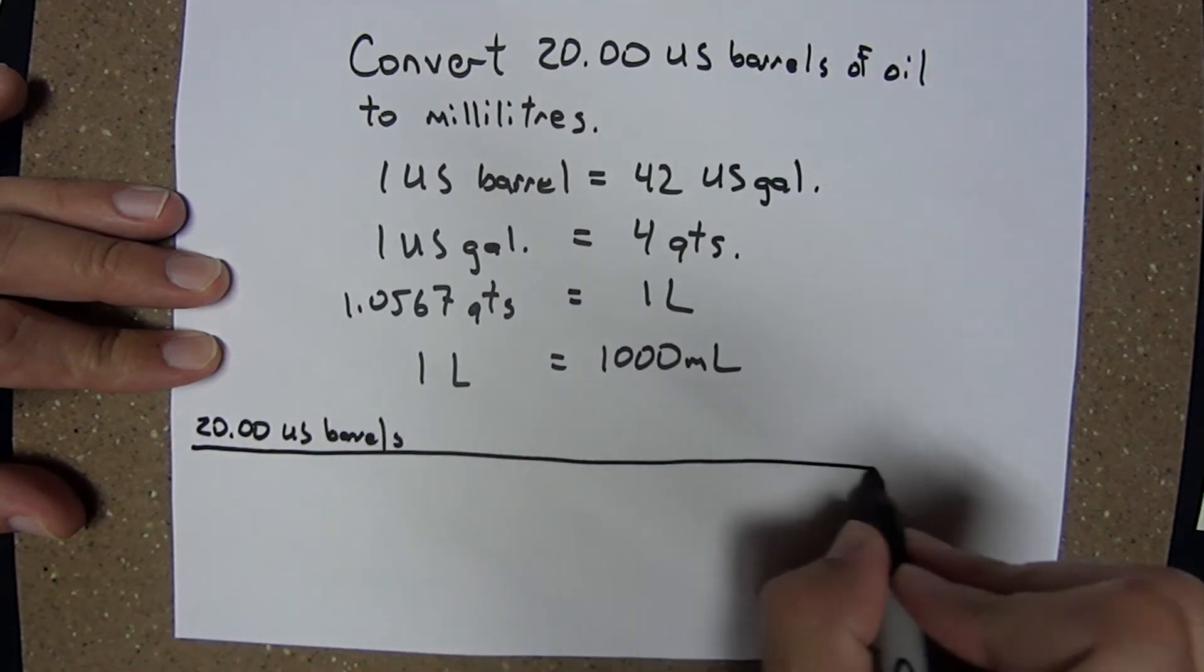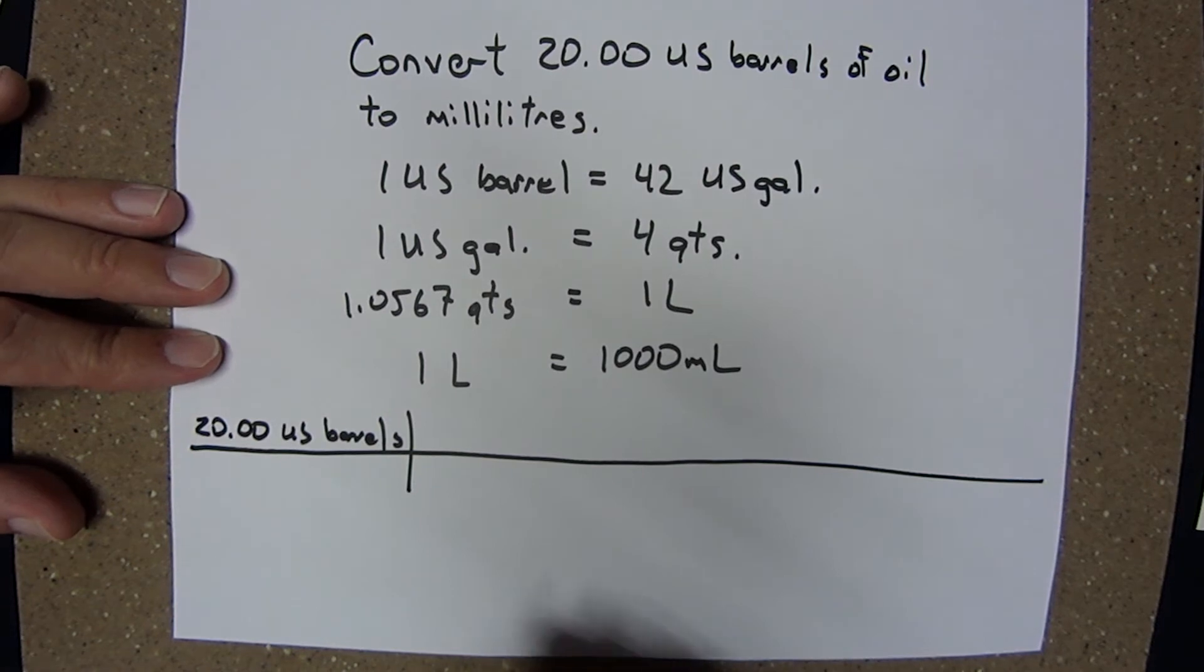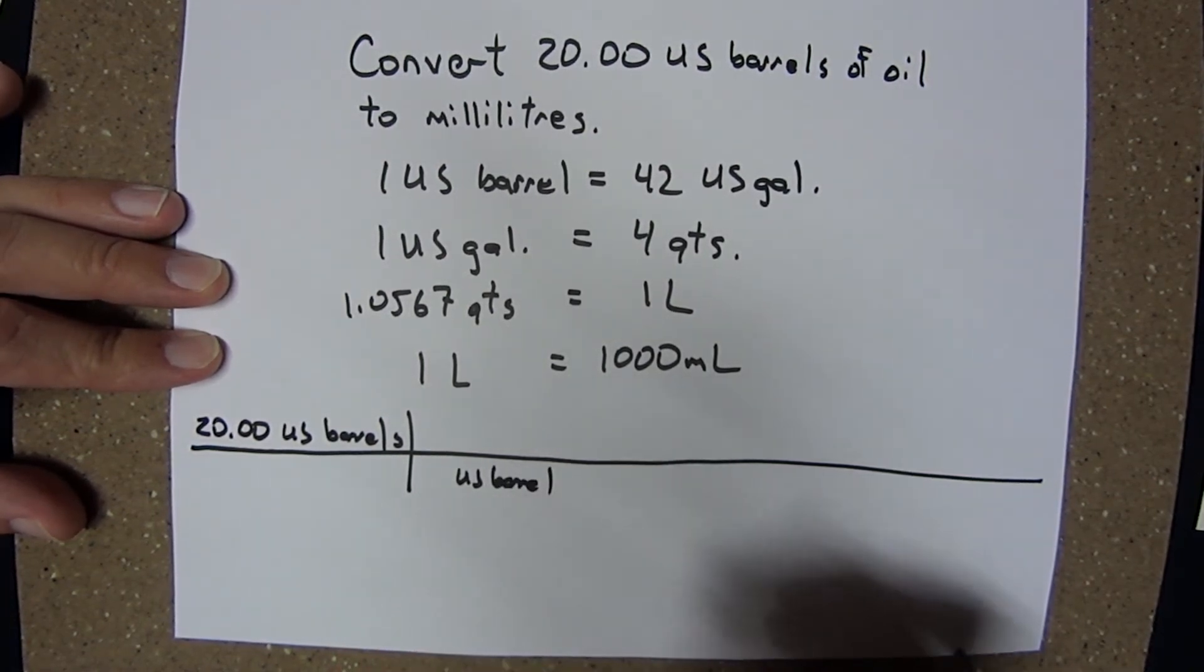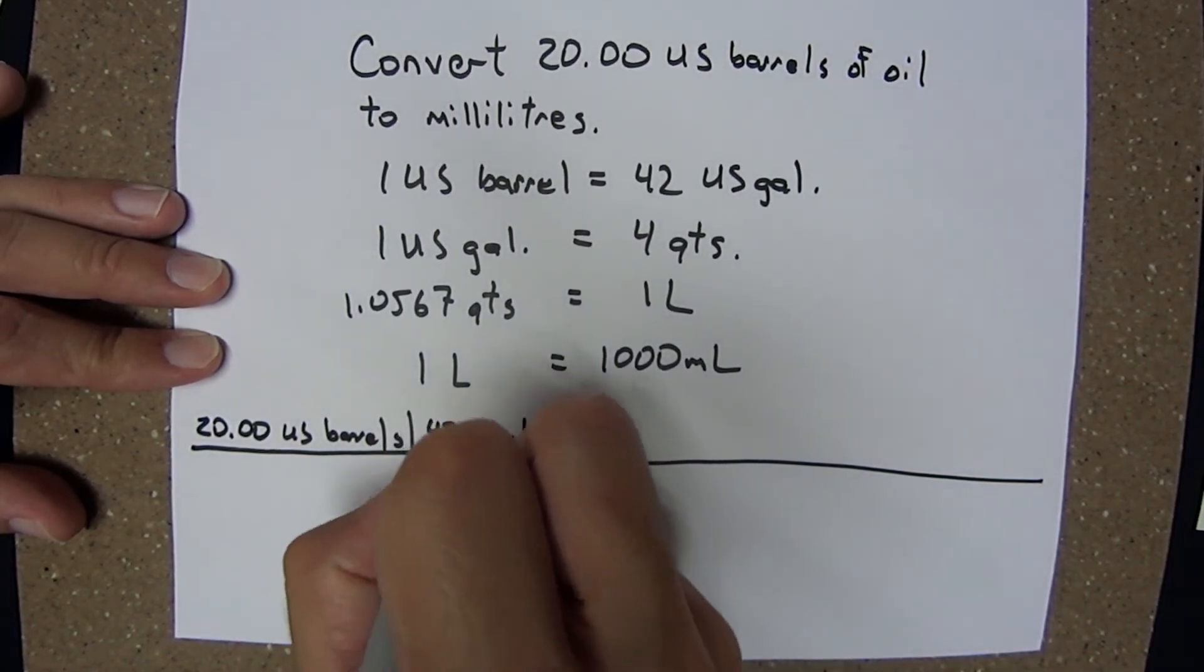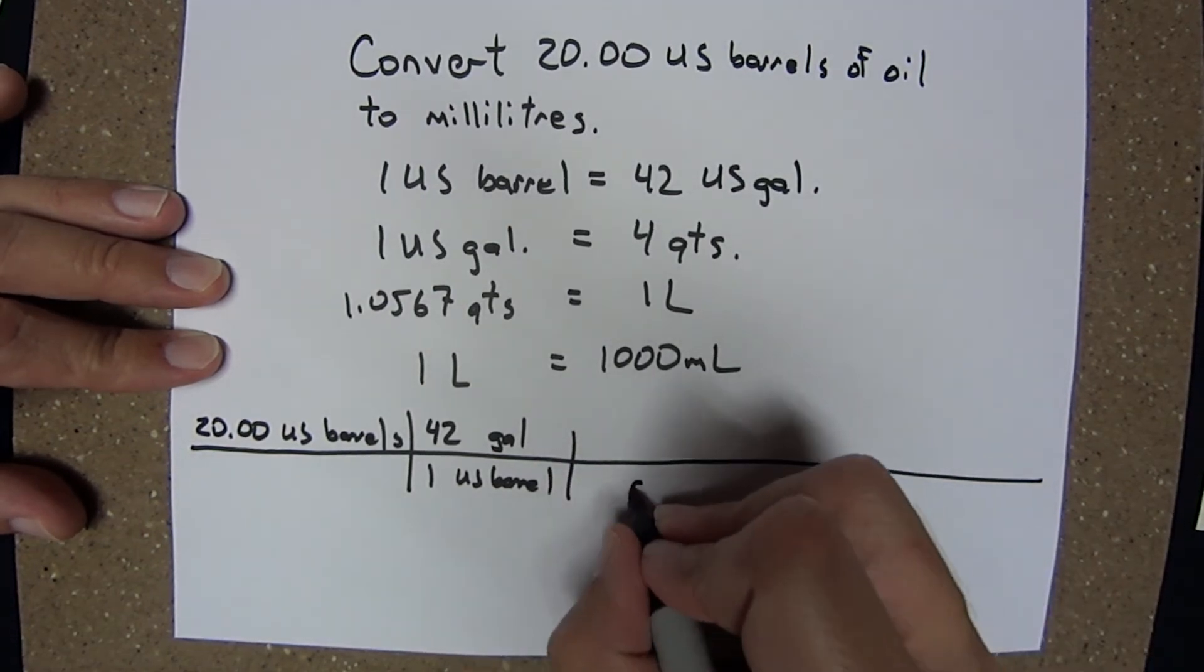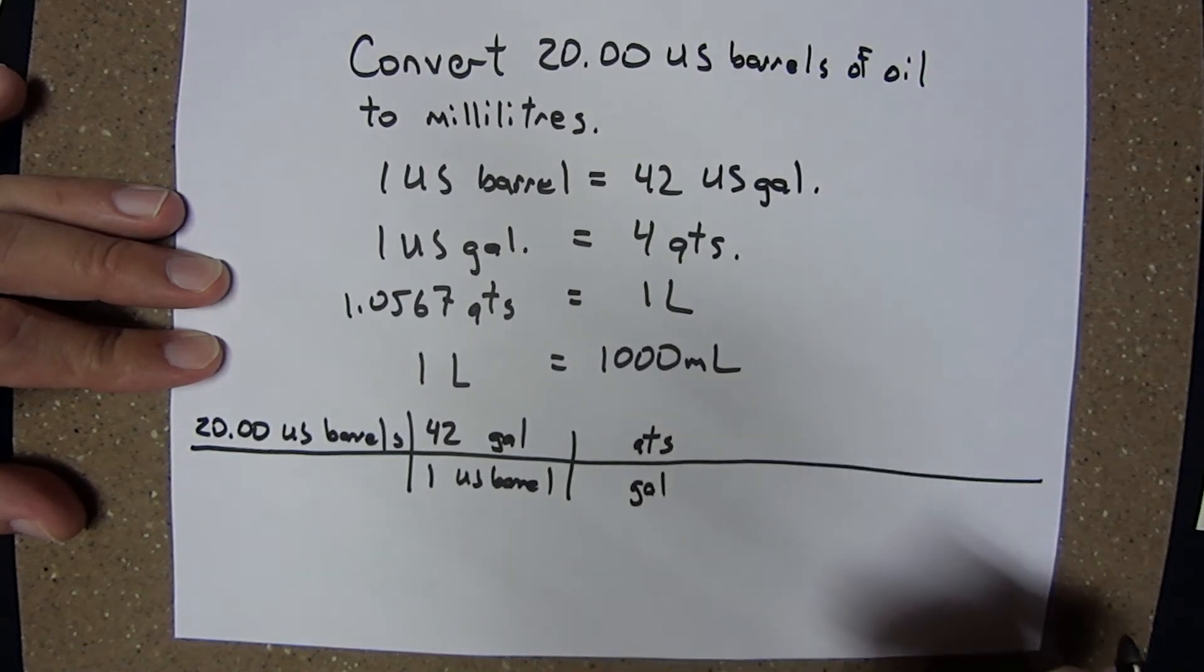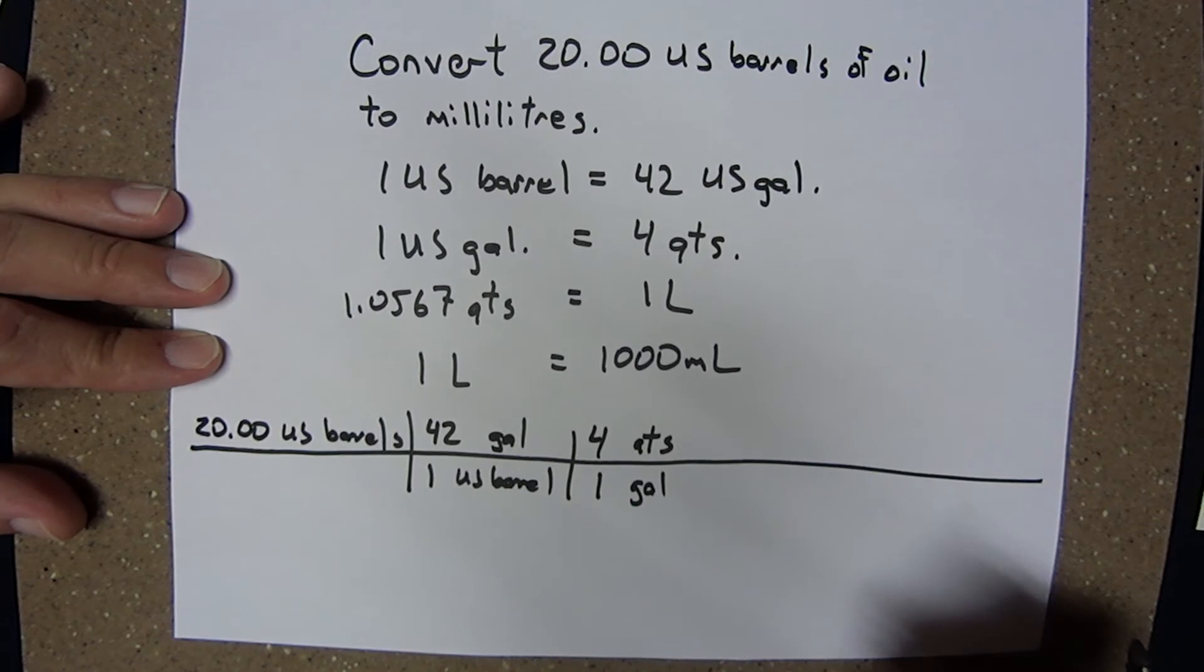And where can I go from US barrels? Well here, there's only one conversion given. I know that US barrels will cancel and will leave me gallons. One US barrel is equivalent to 42 gallons. I'm at gallons. I want gallons to cancel. From gallons I can go to quarts. I know that one gallon is equivalent to four quarts.